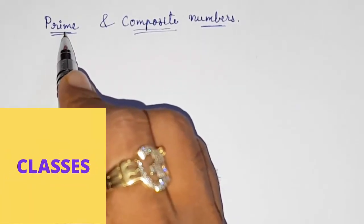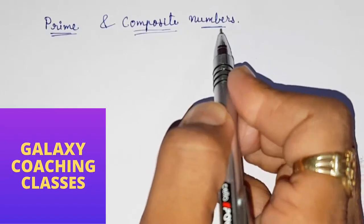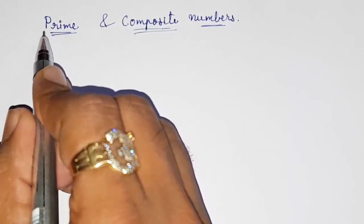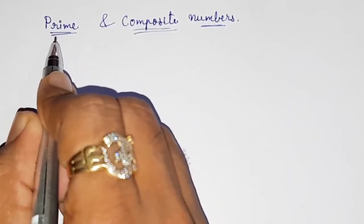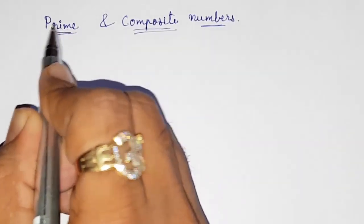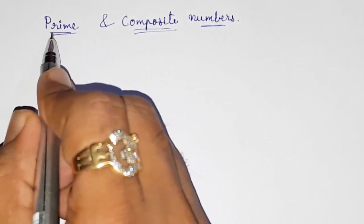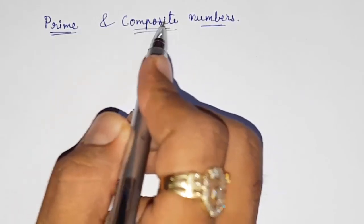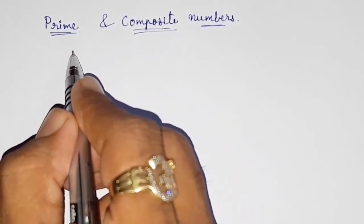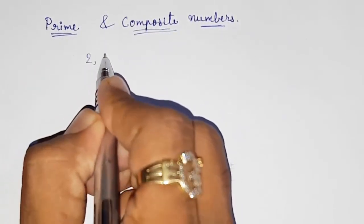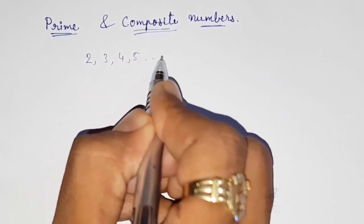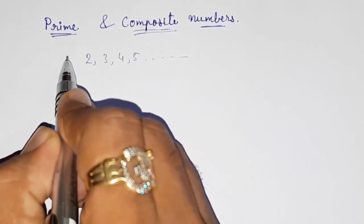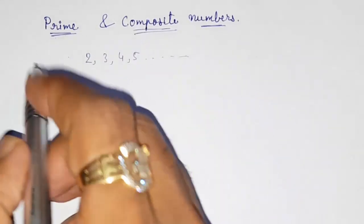Hello friends, today we are going to study about prime and composite numbers. Prime numbers are numbers which have two factors, or we can say they are divided by one and the number itself. All natural numbers greater than one — that is two, three, four, five up to infinity — can be divided into prime and composite. One is not included, and I will tell you why.